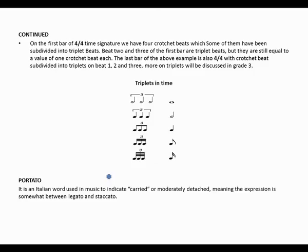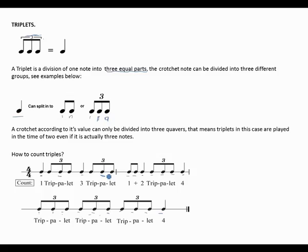The last bar also has crotchet beats subdivided into triplets on beats one, two, and three. Remember: if a beat is divided into a triplet like this, it still equals one beat. So triplet, triplet, triplet accounts for beats one through three, then beat four follows.